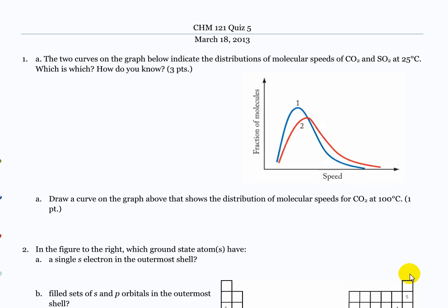Two curves indicate distributions of molecular speeds. Which is which? What do you think?